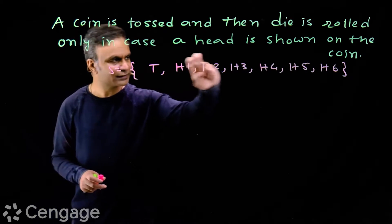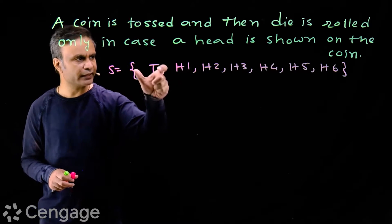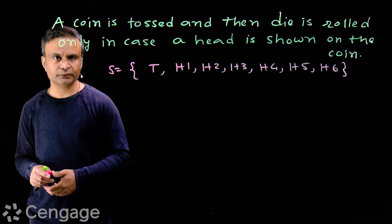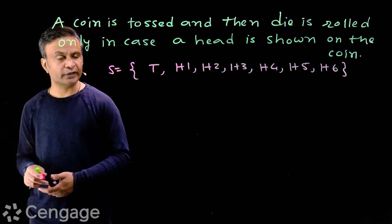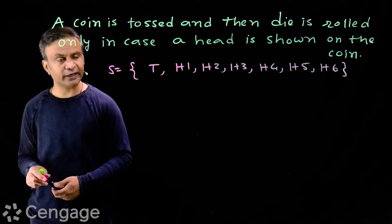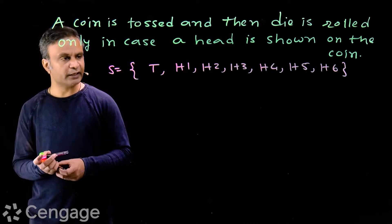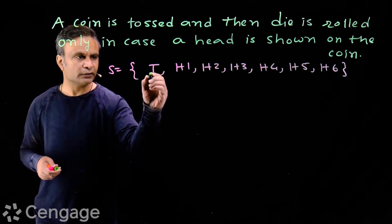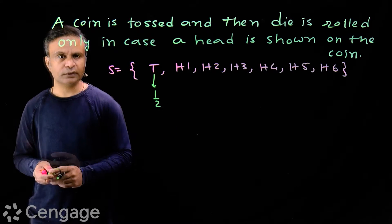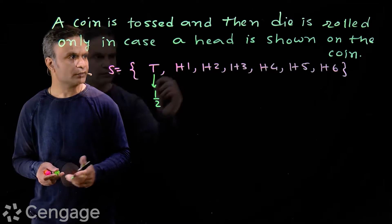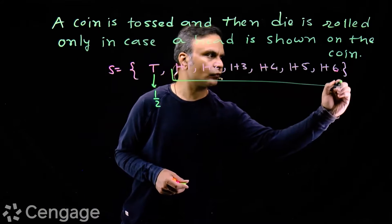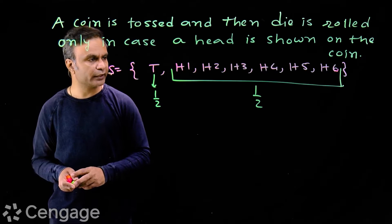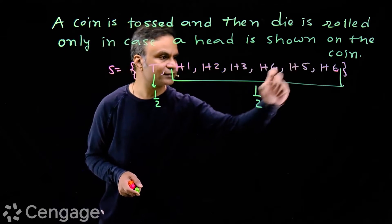Now, are all these events equally likely? Definitely not, because first you are tossing a coin. There is a 50% chance of getting tail and 50% chance of getting head. So the probability of tail is 0.5, equal to half. This event has probability half, and head also has probability half. When it is head, we are rolling a die.